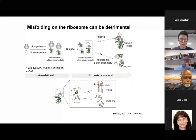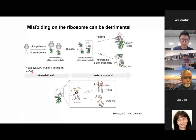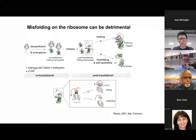Here I show an example, a study from our group, about a protein called AAT, alpha-1 antitrypsin. It's a protein related to a human disease called alpha-1 antitrypsin deficiency. The disease-related variant, ZAAT, forms a certain kind of intermediate state on the ribosome, like a molten globule. This structure persists during translation and after translation as well. Later, this misfolded protein self-assembles into polymers, and we think this results in the manifestation of the disease.